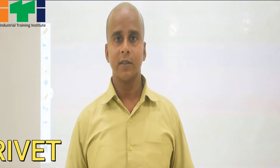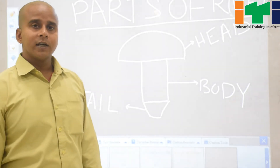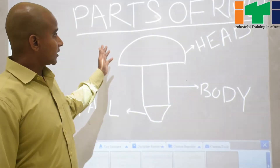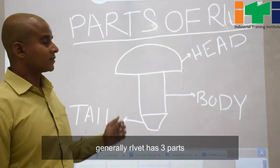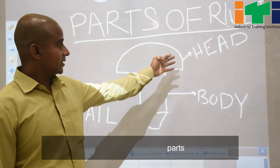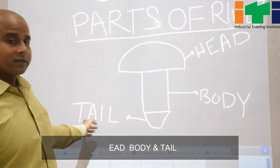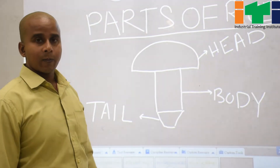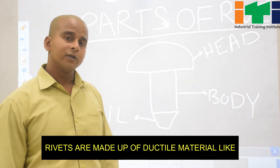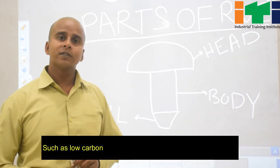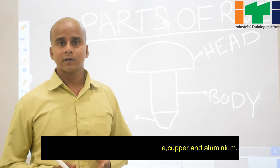Now, parts of a rivet. Generally, a rivet has three parts: one is the head, one is the body, and one is the tail. Generally, rivets are made up of ductile materials such as low carbon steel, brass, bronze, copper, and aluminum.